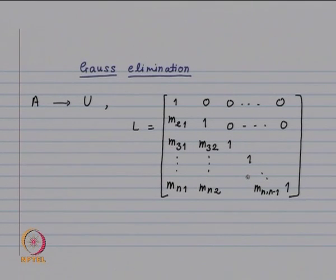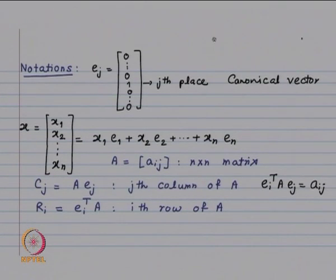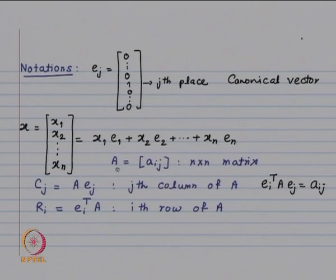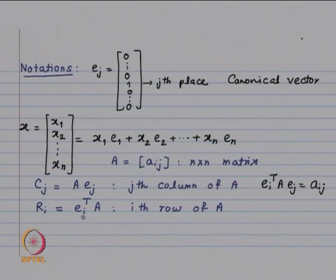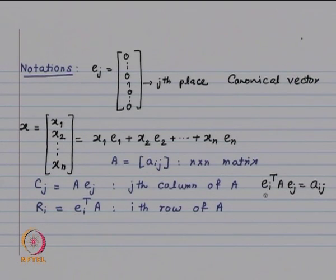We will first consider a 3×3 matrix. Here are some notations: Ej will denote the canonical vector with only 1 at the jth place and all other entries 0. When we talk of a vector x, it is always a column vector. The (i,j) entry of an n×n matrix is denoted Aij. Multiplying A by Ej gives the jth column of A, and Ei^T A gives the ith row of A, and Ei^T A Ej gives the scalar Aij.